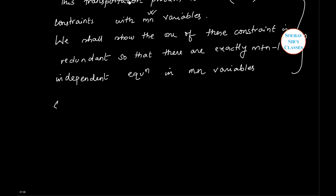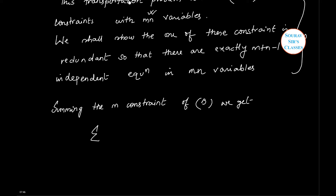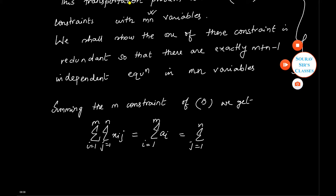Summing the m constraints of equation B, we get: double summation of x_ij, where i runs from 1 to m and j runs from 1 to n, is equal to summation of a_i for i = 1 to m, which is equal to summation of b_j for j = 1 to n. We get this by using equation E which we have already written as a constraint. Let us mark this as equation F.